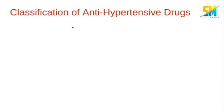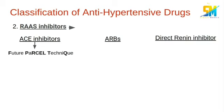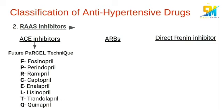The second category is the RAS inhibitors, which includes ACE inhibitors, angiotensin receptor blockers, and direct renin inhibitors. We can remember the ACE inhibitors by the mnemonic 'future partial technique': fosinopril, perindopril, ramipril, captopril, enalapril, lisinopril, trandolapril, and quinapril.